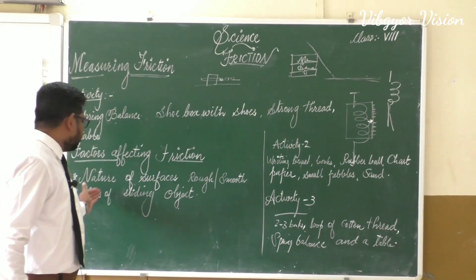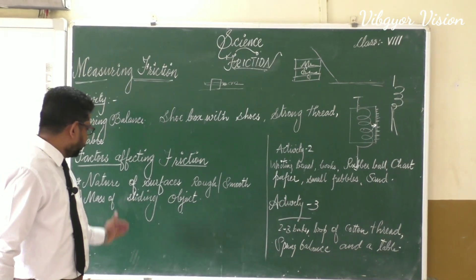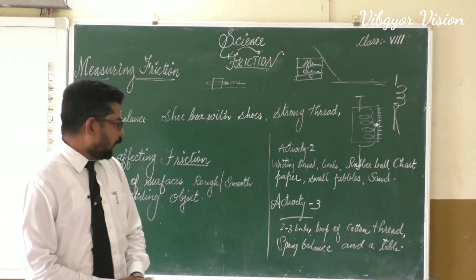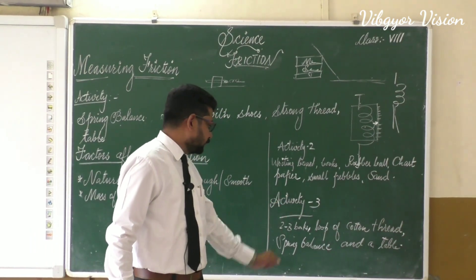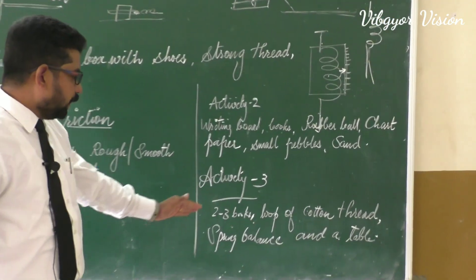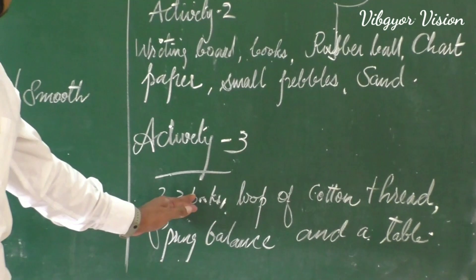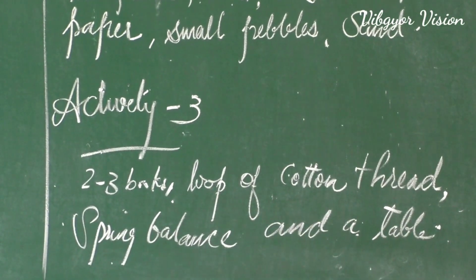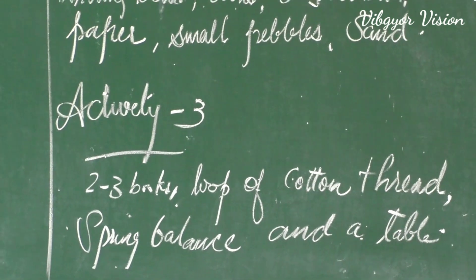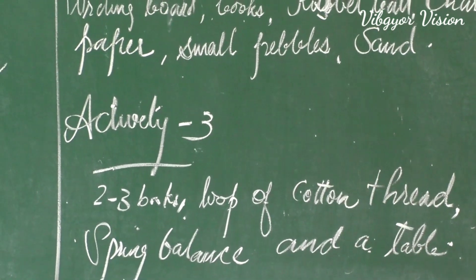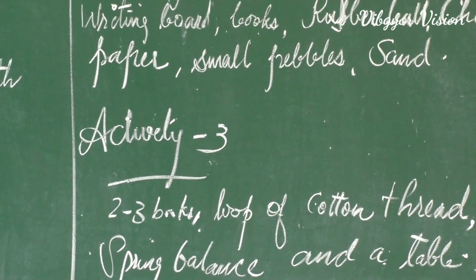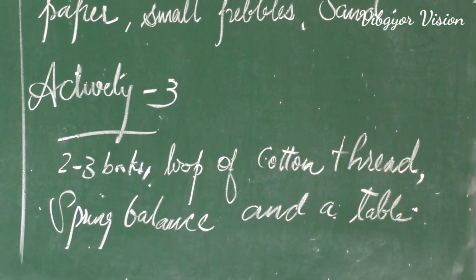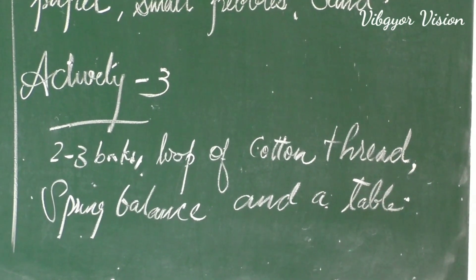To understand the effect of mass, let us do another activity — Activity number 3 of this lesson. For doing this, we need 2 to 3 books, a loop of cotton thread, a spring balance, and a table.